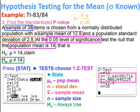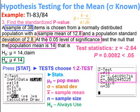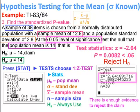For this example, the calculator gives a p-value of .0082 and a test statistic of −2.64. Since the p-value .0082 is less than alpha .05, we reject the null hypothesis. The claim is on the null hypothesis, so we state: there is enough evidence to reject the claim. Make sure to use the correct wording and enter the correct information into your calculator.